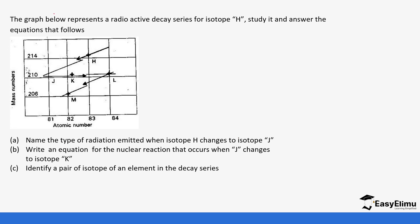The graph below represents a radioactive decay series of isotope H — study it and answer the questions that follow. Isotope H has a mass number of 214 and an atomic number of 83.